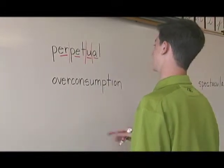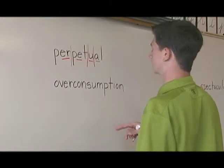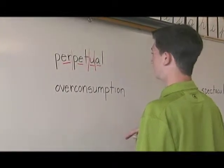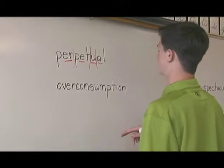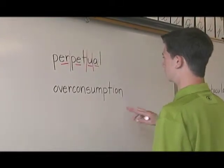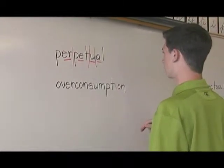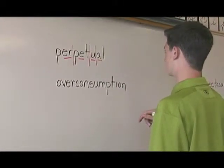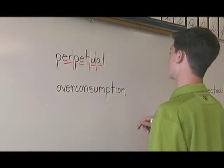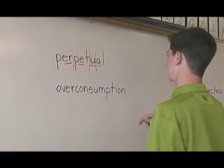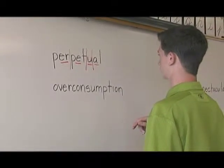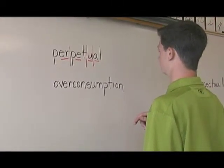Second syllable — E, E, pet. Third syllable — U. U at the end of the accented syllable says U. We'll see if it's accented when we're done.